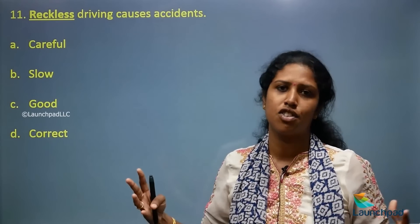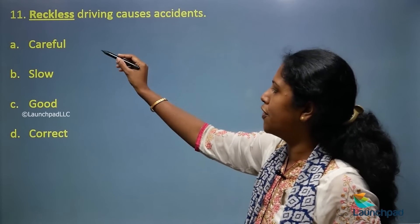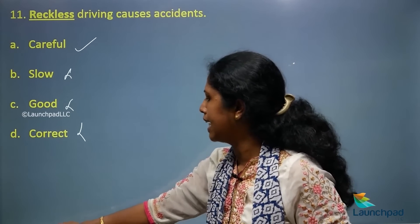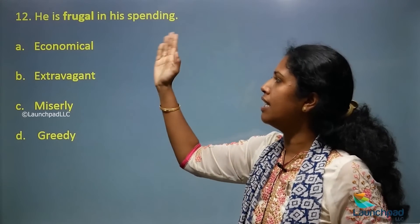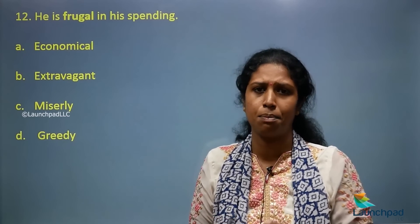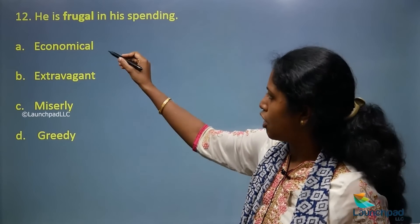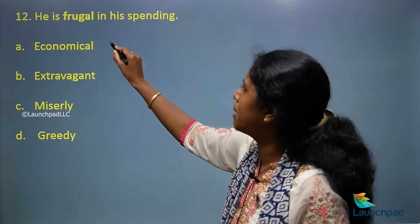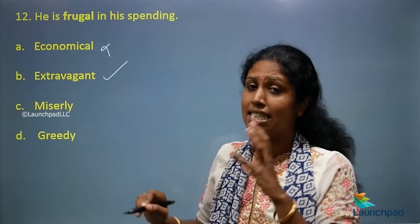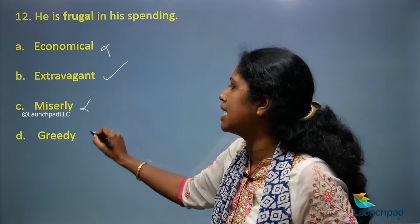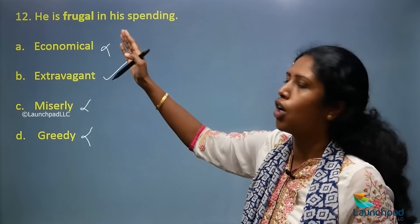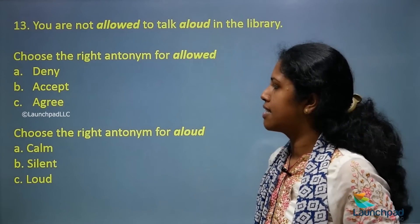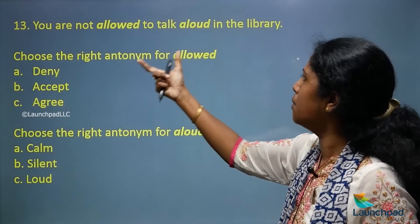Next: 'Reckless driving causes accidents.' Reckless means without any care. The options are: careful, slow, good, correct. 'Careful' is the right option. Next: 'He is frugal in his spending.' Frugal means very minimal spending. Options: economical, extravagant, miserly, greedy. Economical is also minimal — not the right option. Miserly and greedy are also not correct. The antonym of frugal is 'extravagant.'